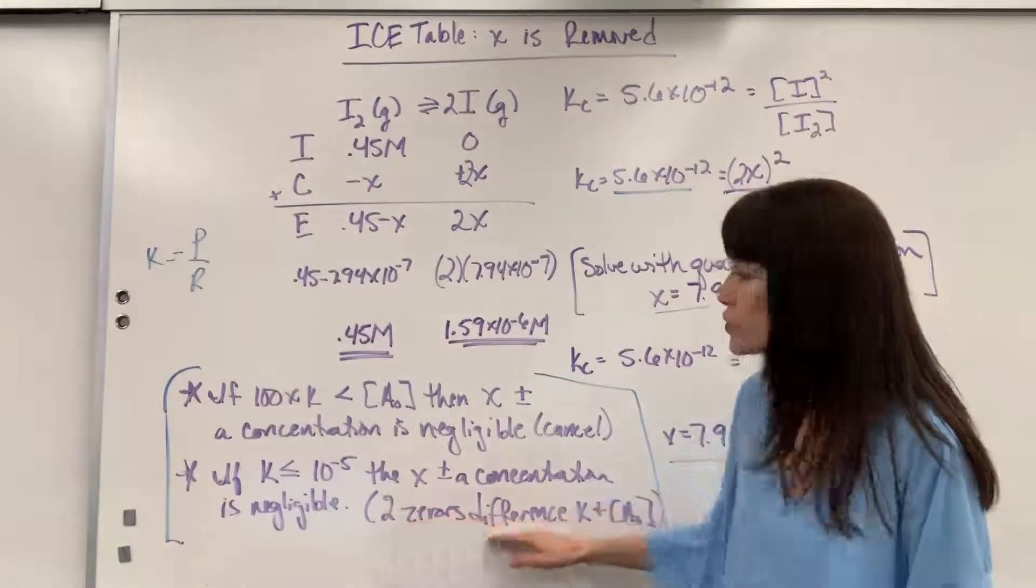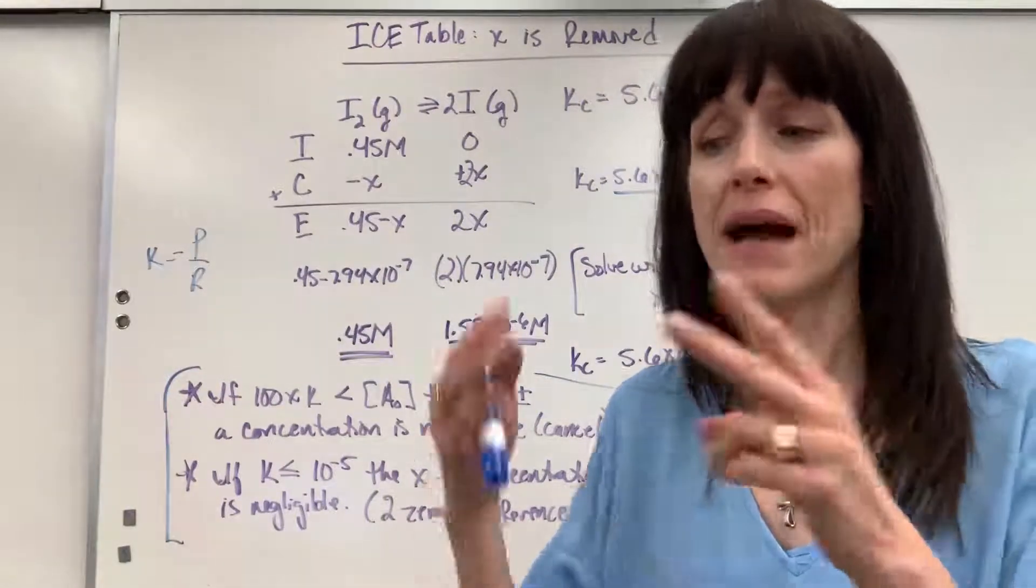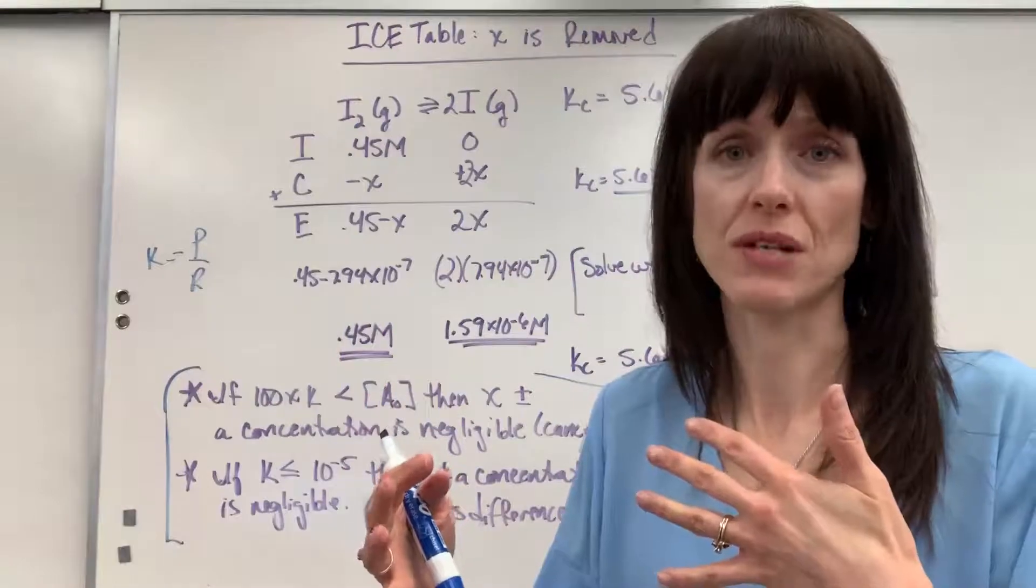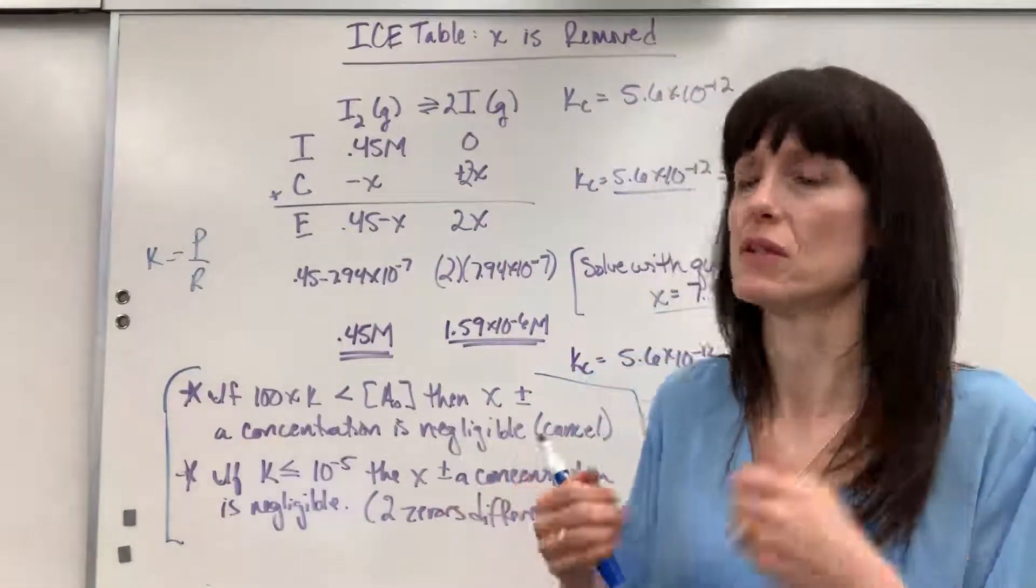You're looking for two zeros difference. Now, if you don't have a difference of two zeros, a magnitude of 100 difference, you're stuck doing the quadratic equation. You'll have to do the quadratic equation.